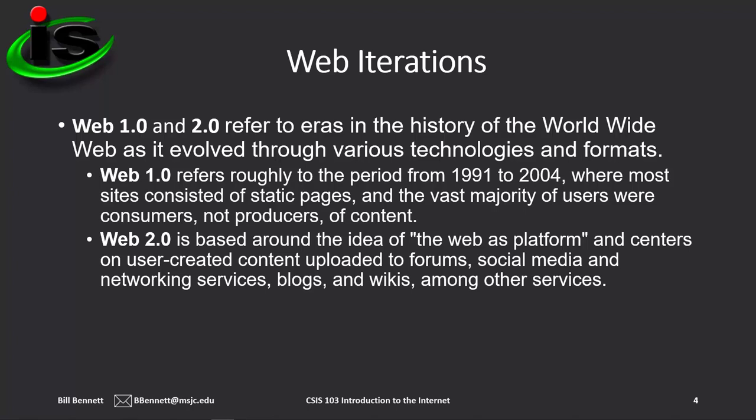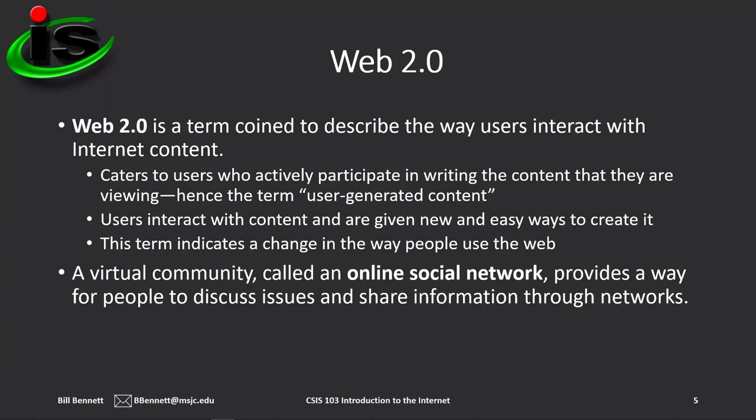To better understand these technologies, you first need to understand the iterations of the web. Web 1.0 and 2.0 refer to eras in the history of the World Wide Web as it evolved through various technologies and formats. Web 1.0 refers roughly to the period from 1991 to 2004, where most sites consisted of static pages and the vast majority of users were consumers, not producers, of content. Web 2.0 is based around the idea of the web as a platform and centers on user-created content uploaded to forums, social media and networking services, blogs, and wikis. Web 2.0 is a term coined to describe the way users interact with Internet content, catering to users who actively participate in writing the content they are viewing — hence the term user-generated content.